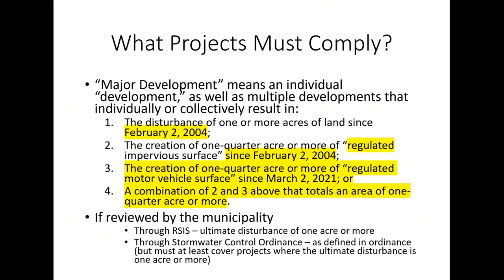Projects required to comply with the stormwater management rules are called 'major development.' The amended definition now reads that major development means an individual development as well as multiple developments that individually or collectively result in one of four things. This is a clarification of current implementation — you can't subdivide into smaller projects to avoid regulation by disturbing 0.99 acres on successive days.